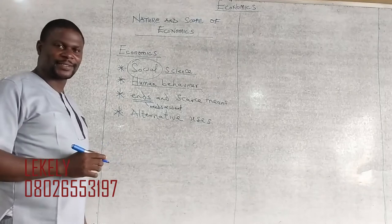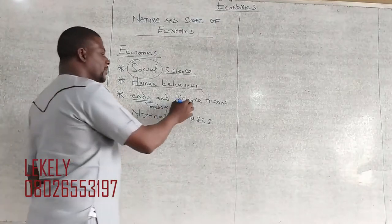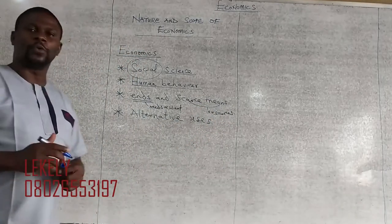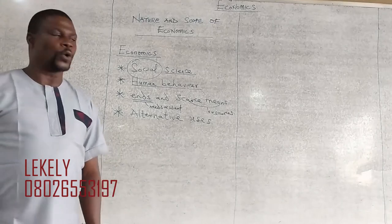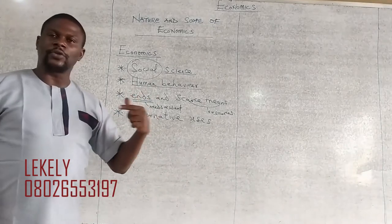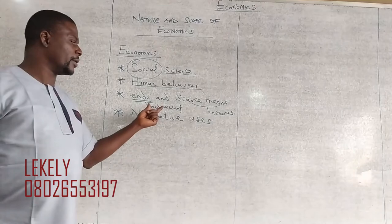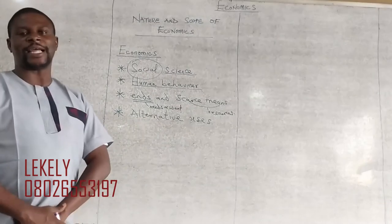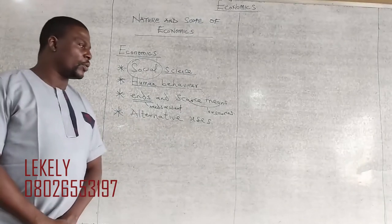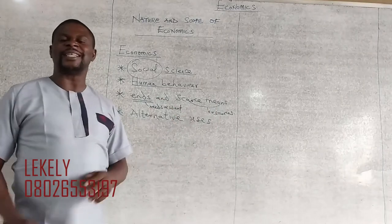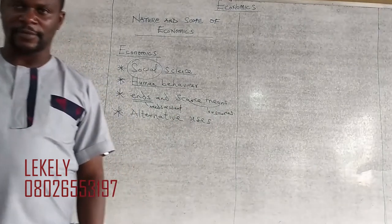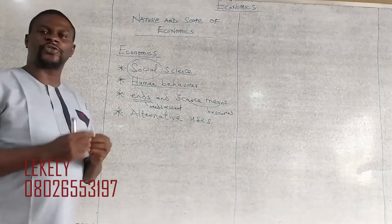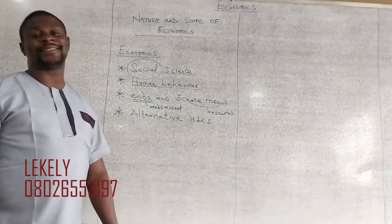It studies about their needs and wants — those are the ends. And then scarce means — the resources that are available to meet those needs. Scarce means that resources are not always enough, yet there are always needs. So how do you manage resources that are not enough to meet the needs and wants?